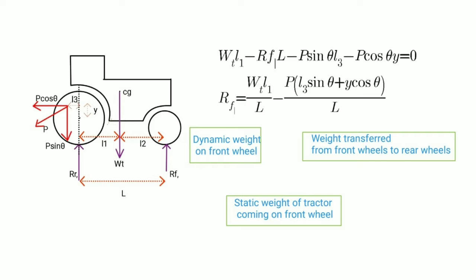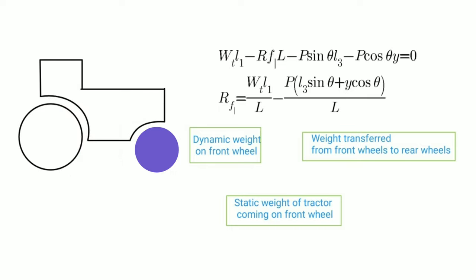Now let's find out reaction on front wheels. Take moment around rear axle. When you see from rear axle, Wt produces moment in clockwise direction, so it is written as positive. And RF dash, P sin theta, and P cos theta produce reaction in anticlockwise direction, so they are written as negative. From this, we can obtain expression for dynamic reaction on front wheel. In this equation, RF dash is dynamic reaction on front wheels. Wt into L1 divided by L is static reaction on front wheels. And P into L3 sin theta plus h cos theta divided by L is the weight transferred from front wheels to rear wheels. It means pull on tractor removes weight from front axle and adds weight to rear axle.